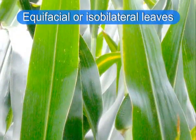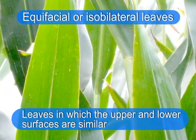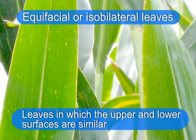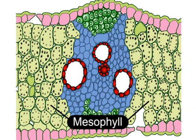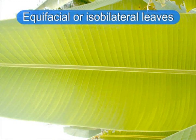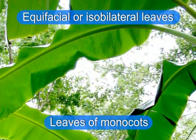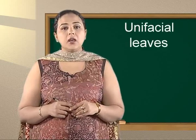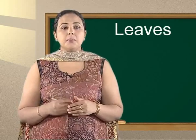The third type are equifacial or isobilateral leaves. The leaves in which the upper and lower surfaces are similar are called equifacial or isobilateral leaves. In this type of leaves, mesophyll is not differentiated — it is made of only spongy or palisade parenchyma, as in monocots. Leaves of monocots are the examples of this type. In equifacial or isobilateral leaves, upper and lower surfaces are clearly differentiated but similar in appearance.